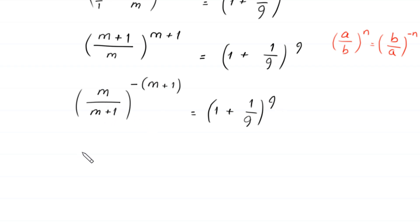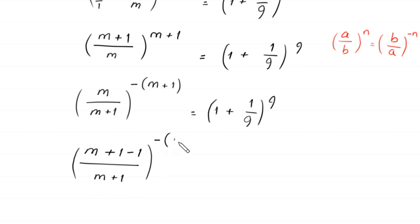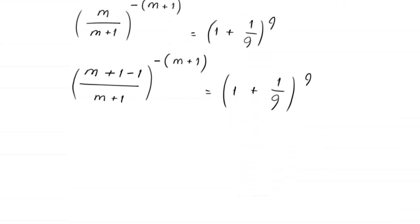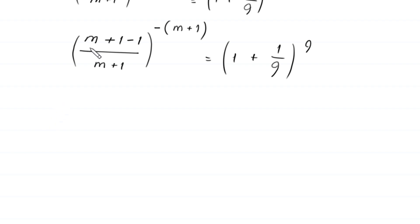The expression on the left hand side can be written by adding 1 and subtracting 1, which makes a change equal to 0, so this does not change the original expression. We get m divided by m plus 1, whole to the power negative m plus 1. Now, if we consider m plus 1 as a single term and negative 1 as another term, this fraction can be written as m plus 1 over m plus 1, minus 1 over m plus 1.